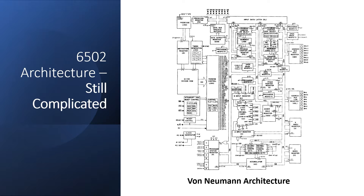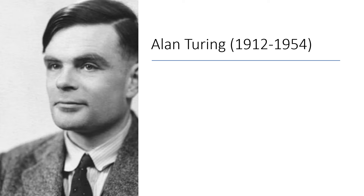The 6502 is a von Neumann architecture, and while von Neumann architectures are an efficient way to make microprocessors, they're still very complicated. Isn't there somewhere easier we can start?